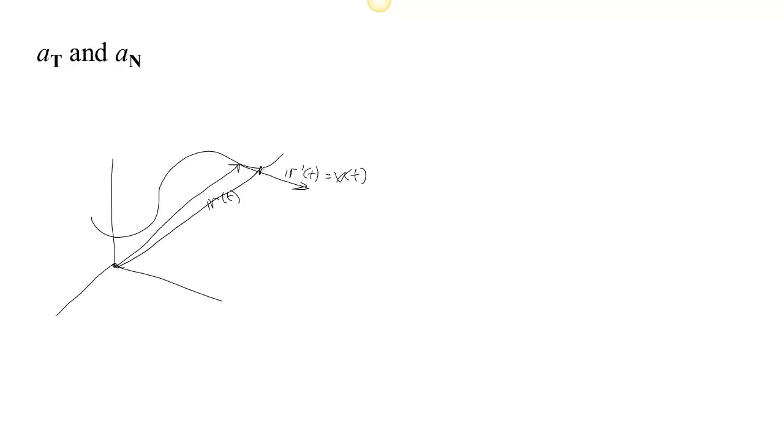So r is going to be changing, and so will the velocity along that curve, and we want to consider changes in velocity. Since velocity has direction and magnitude, there can be changes in both the direction and changes in the magnitude.